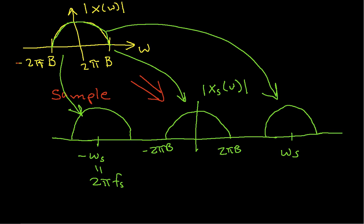And it turns out this actually happens over and over again. So out here at 2 omega s, I get another copy of the spectrum. And so the idea is that every integer multiple of omega s, I have a copy of the spectrum of x.